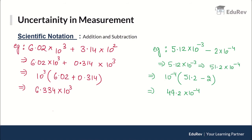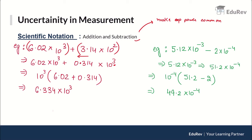Now let us carry out mathematical operations on numbers in scientific notation — starting with addition and subtraction. For example: 6.02 × 10³ + 3.14 × 10². While carrying out addition and subtraction, first you must make the exponential powers common. So I convert 3.14 × 10² to 0.314 × 10³, then add: 6.02 + 0.314 = 6.334, giving 6.334 × 10³.